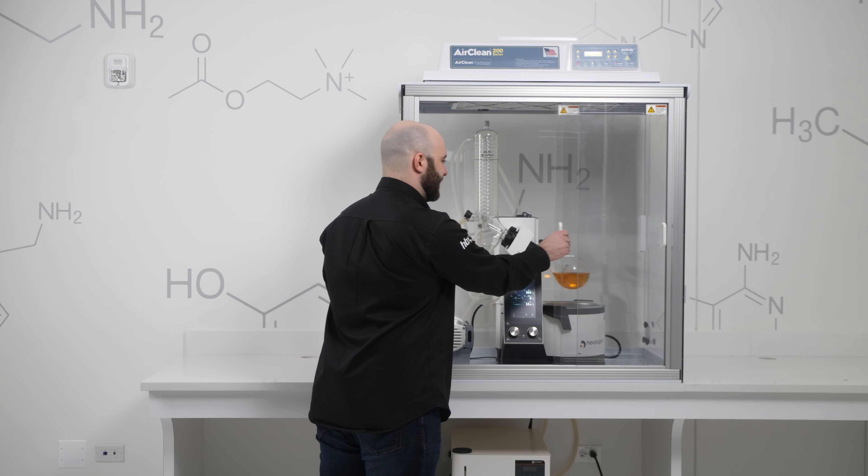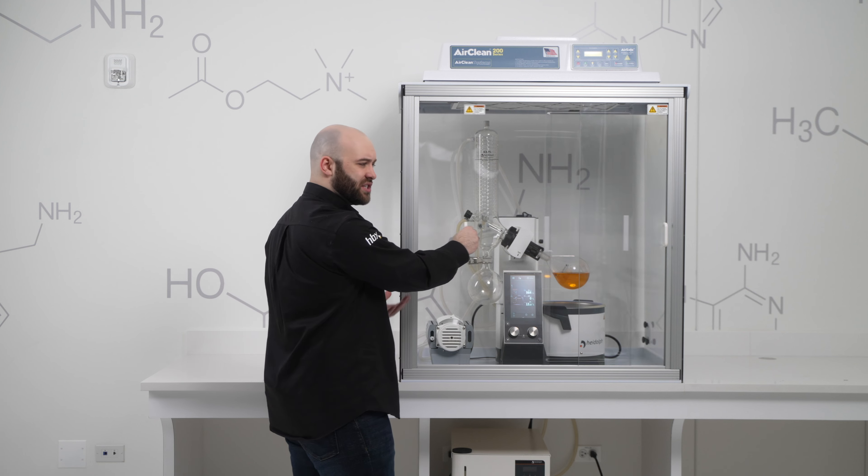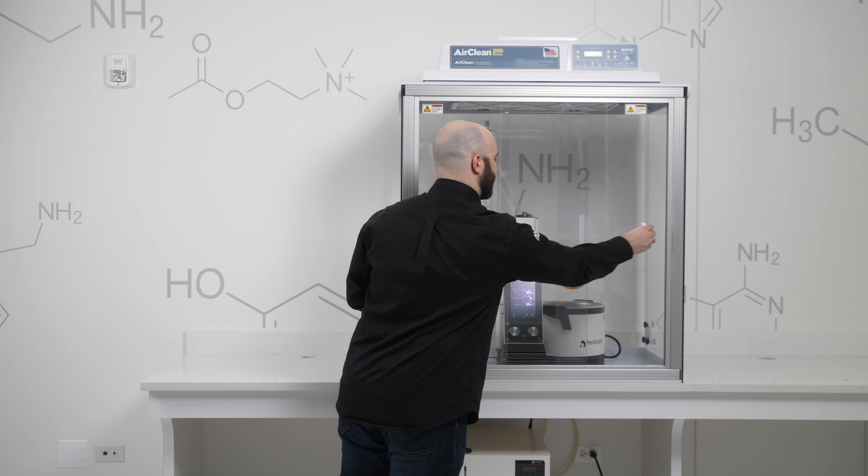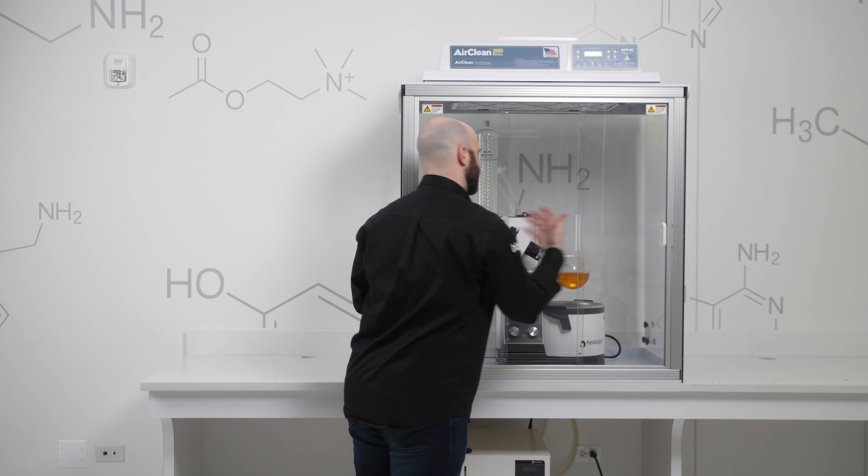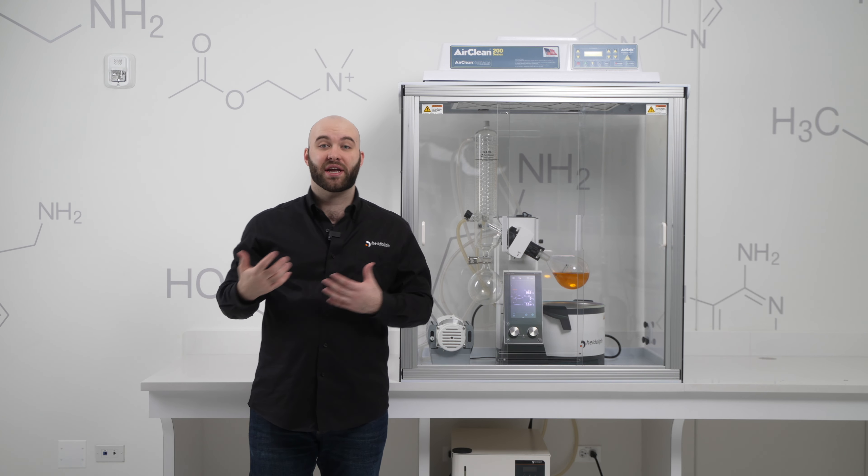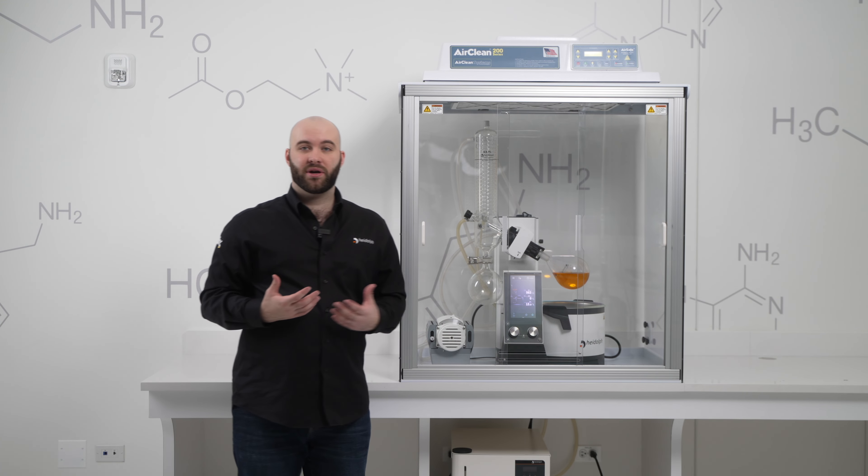The air clean enclosure makes for very easy operation thanks to the three sliding doors. This allows us very easy in and out with our evaporation flask, our receiving flask, our heating bath in case we want to refill it, while also enabling very easy access to our panel for changing any parameters.